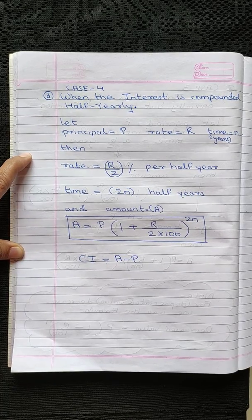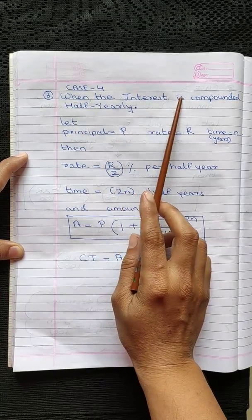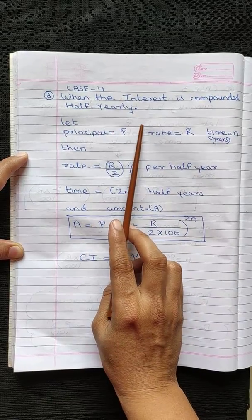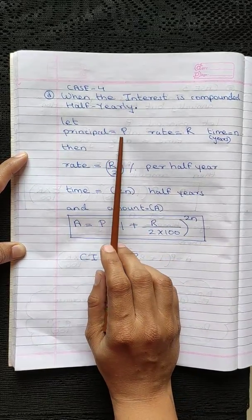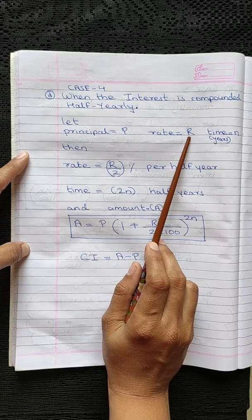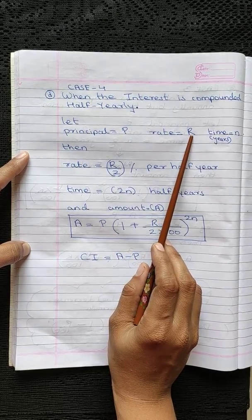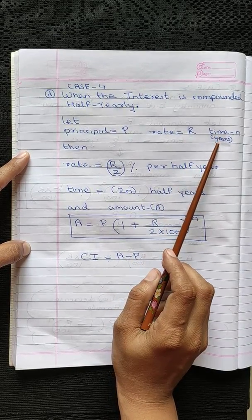Now let's see case 4 when the interest is compounded half yearly. In this case, the principle P and the rate of interest is R per annum, and time is taken in years, that is N years.